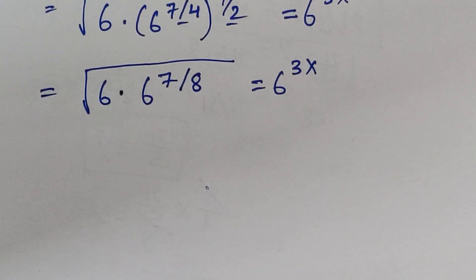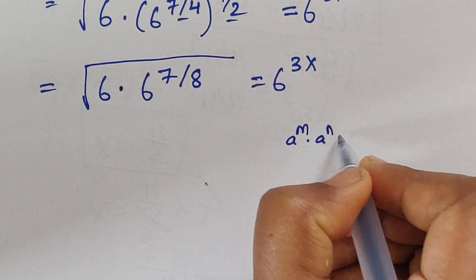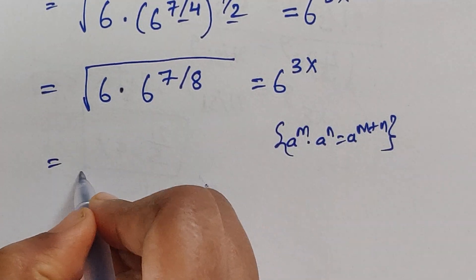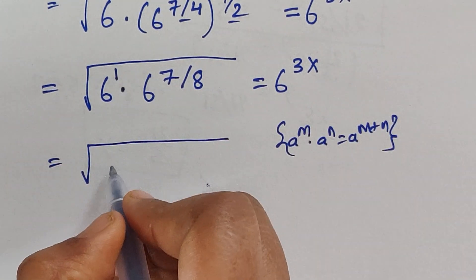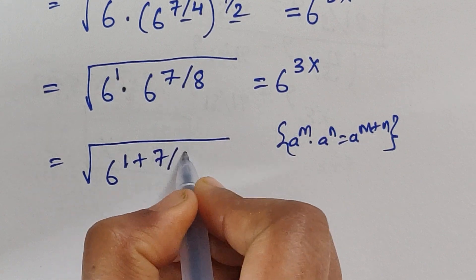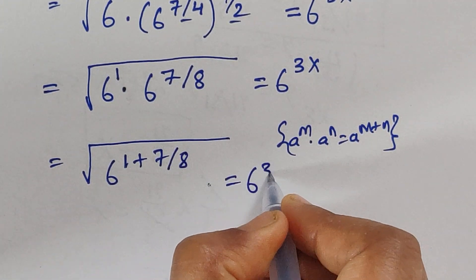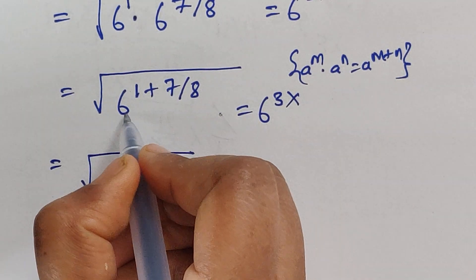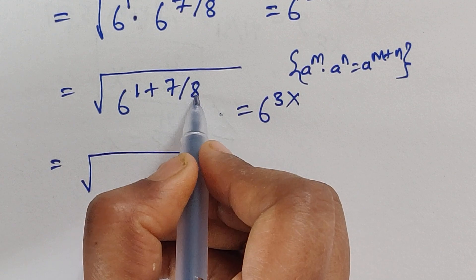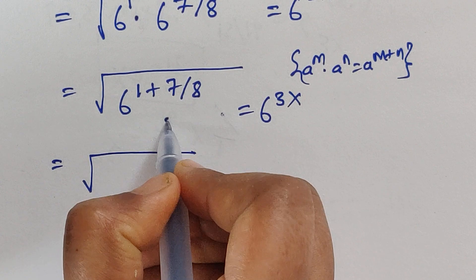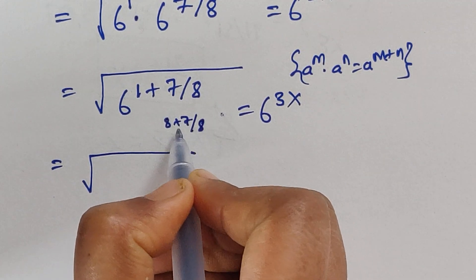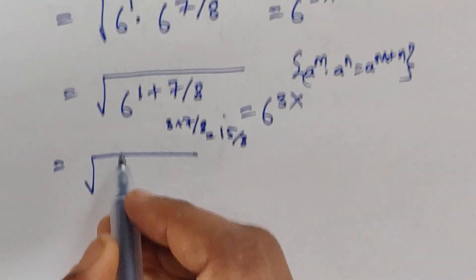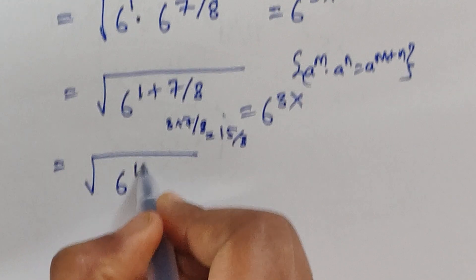Again using this formula: 6 to the power of 1 plus 7 by 8. So 8 plus 7 divided by 8: 8 plus 7 equals 15, so we get 15 divided by 8. Therefore, 6 to the power of 15 divided by 8.